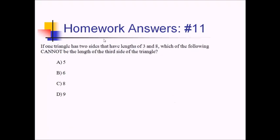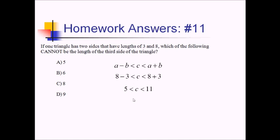For number 11, if a triangle has two sides with lengths 3 and 8, which of the following can't be the length of a third side? The third side has to be between the difference and the sum of the other two sides — between 8 minus 3 and 8 plus 3, or between 5 and 11. Note that 5 and 11 are not included; this is strictly less than. So answer choice A, which is 5, is out of bounds, while 6, 8, and 9 are all inside this range. We're going with A.